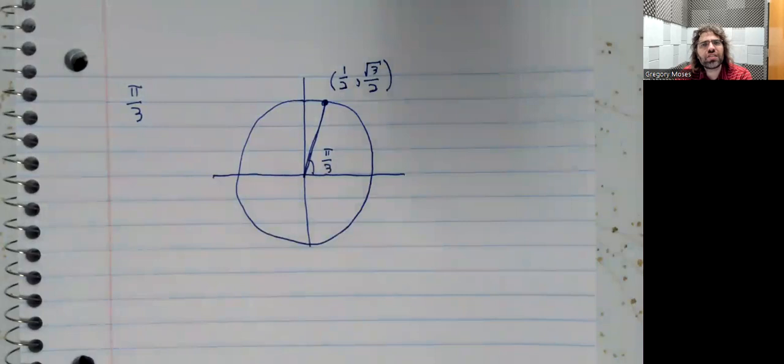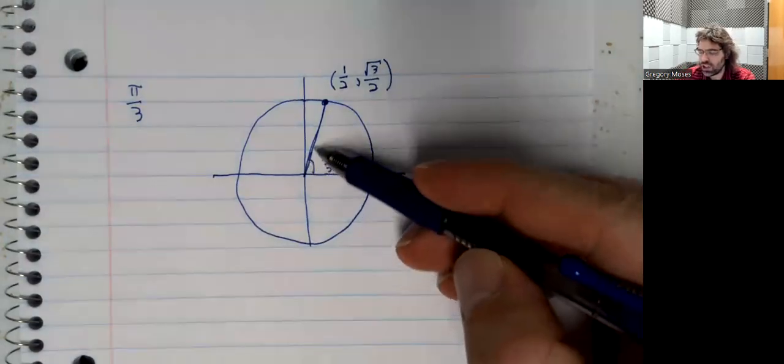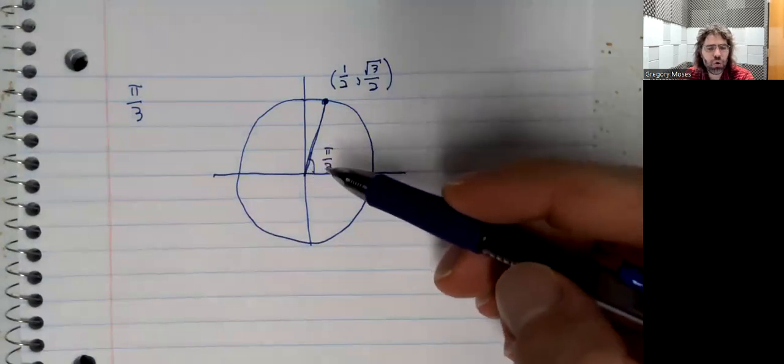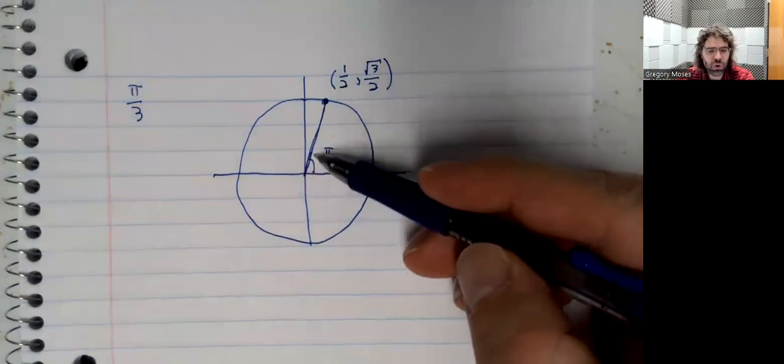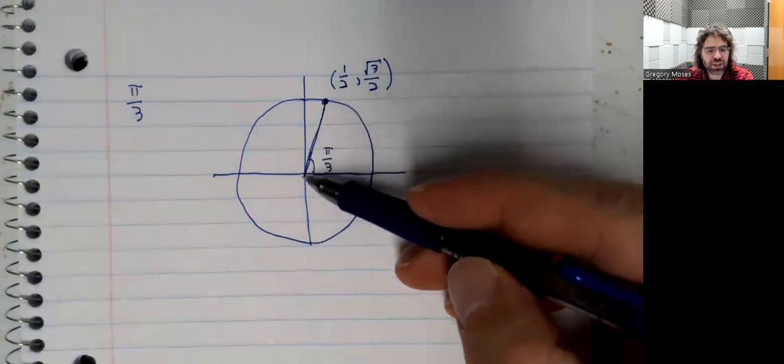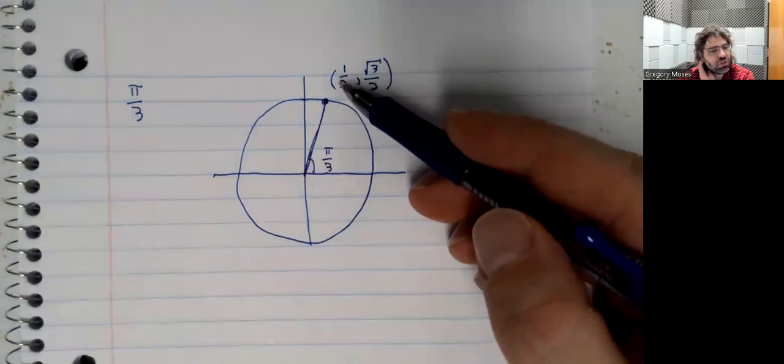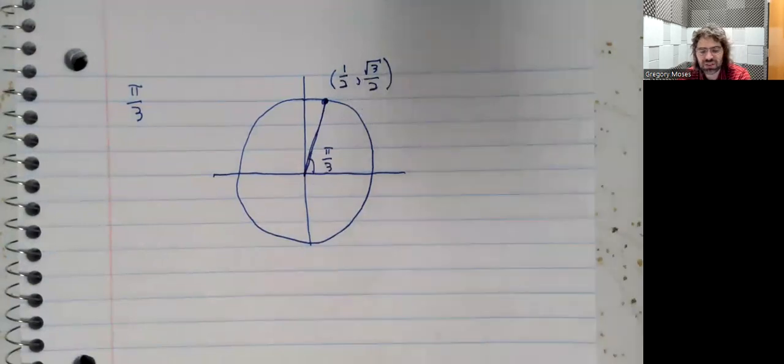So periodicity is the observation that although I've called this angle pi over 3, a whole bunch of angles look just like this and will therefore have the same cosine and the same sine.